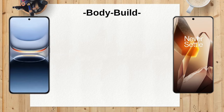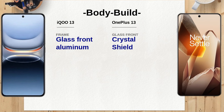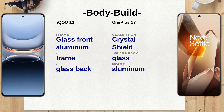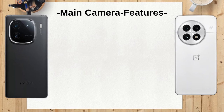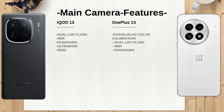The iQO13's camera system includes impressive features like dual-LED flash, HDR, and various modes for enhanced photography. Meanwhile, the OnePlus 13 incorporates Hasselblad color calibration for superior color accuracy, along with features like AI glass reflection removal and Hasselblad portrait mode, which can elevate your photography experience significantly. Both smartphones come equipped with a 32-megapixel selfie camera, but the iQO13 has a slightly wider aperture at f2.5 compared to the OnePlus 13's f2.4.